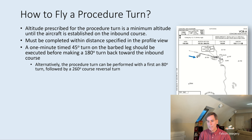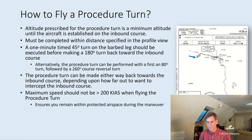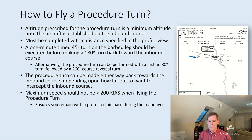The procedure can be done by making an 80-degree turn to the right or left, followed by a 260-degree turn back toward the inbound course. Alternatively, a one-minute, 45-degree turn on the barbed leg can be executed before turning 180 degrees back. The procedure turn can be made either way depending on how far out you are to intercept the inbound course, but don't exceed the specified maximum distance — in this example, 10 nautical miles. The maximum speed for a procedural turn is 200 knots or less, to ensure you stay within the protected airspace.